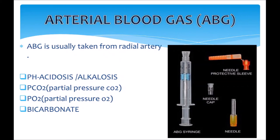Next is arterial blood gas (ABG) analysis. For ABG, we generally collect blood from the radial artery. Arterial blood gas analysis measures the pH of the blood, PCO2, PO2, and bicarbonates.